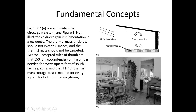Figure 8-1 in your book is a schematic of a direct gain system, and Figure 8-1b illustrates a direct gain implementation in a house. The thermal mass thickness should not exceed 6 inches. Solar radiation enters through a window, heats the floor, and free convection allows it to heat the room. Two well-accepted rules of thumb: 150 pounds of masonry mass is needed for every square foot of south-facing glazing, or 9 square feet of thermal mass storage area is needed for every square foot of south-facing glazing.